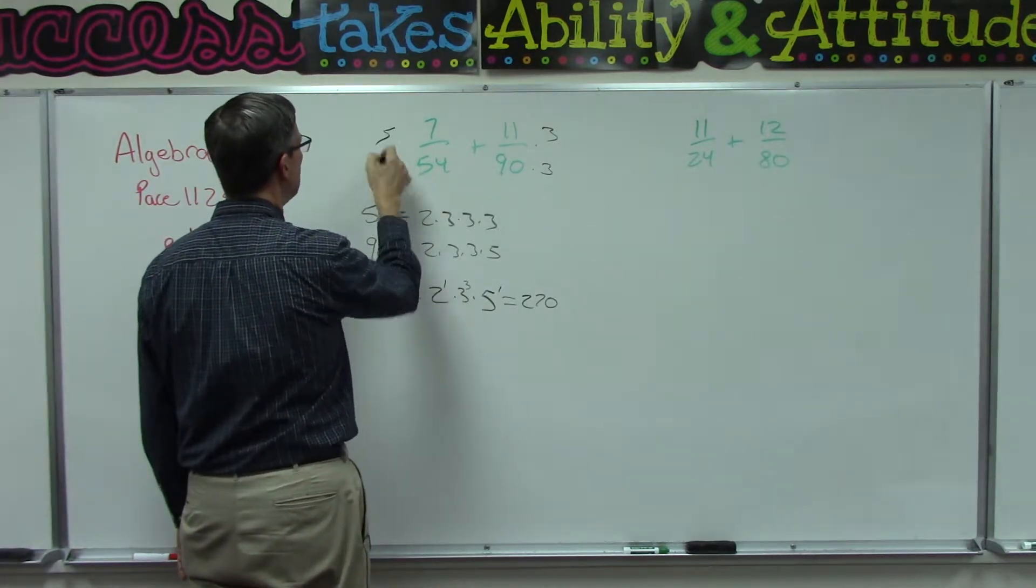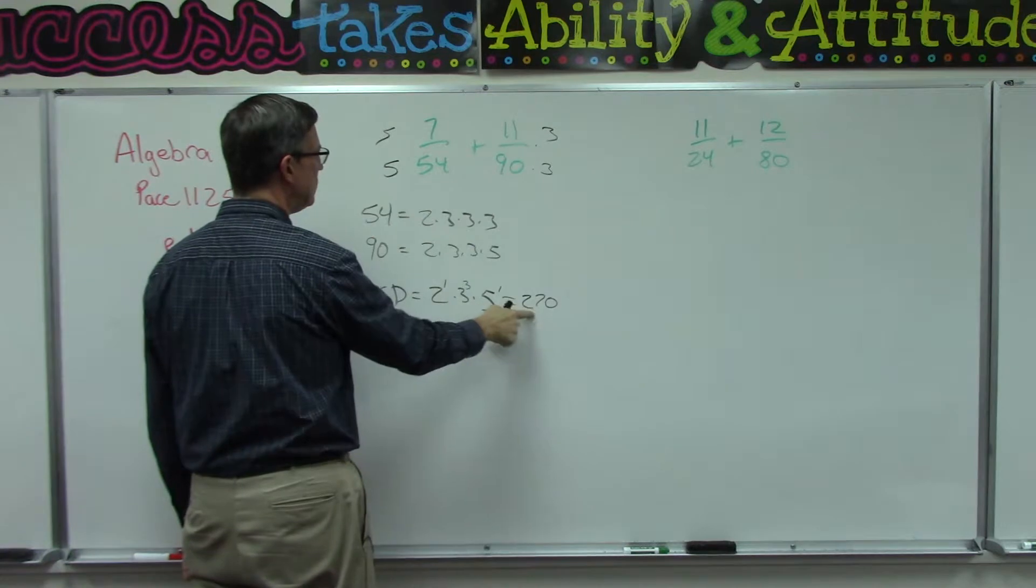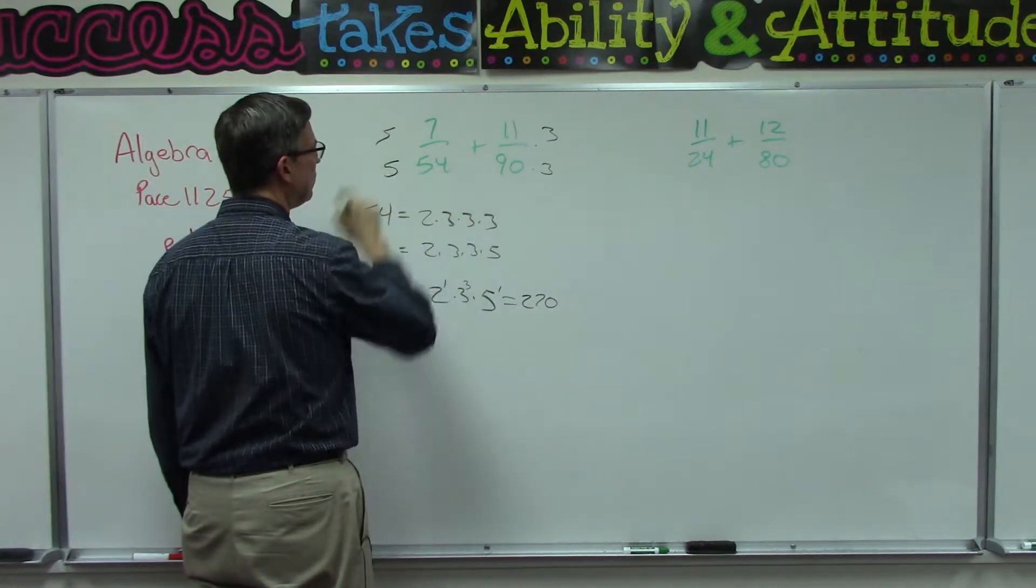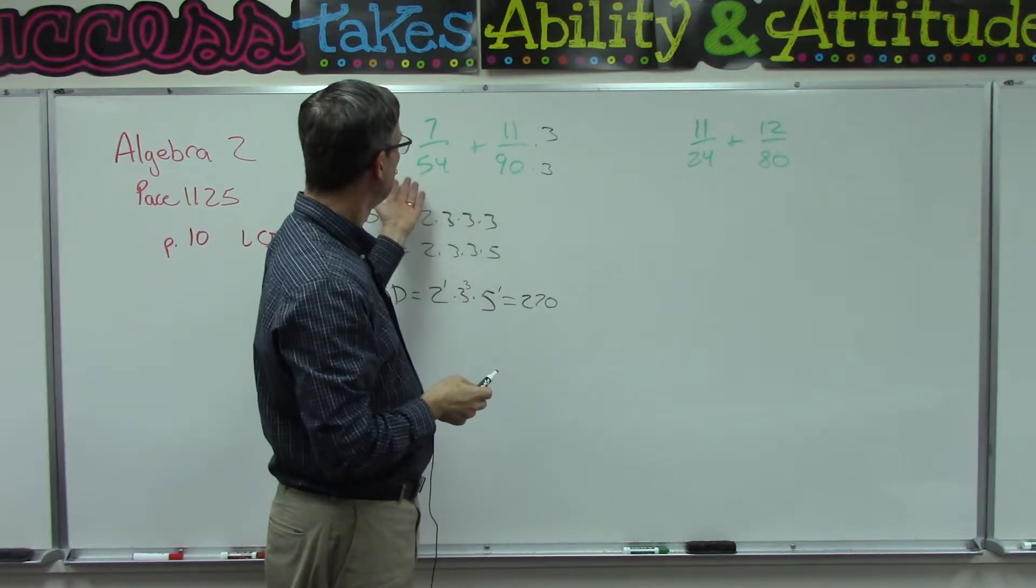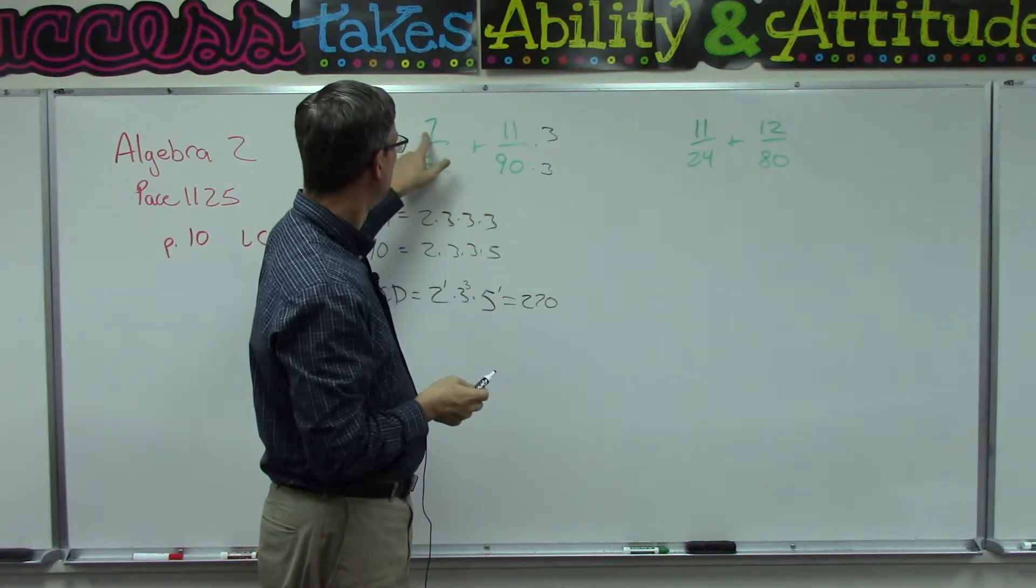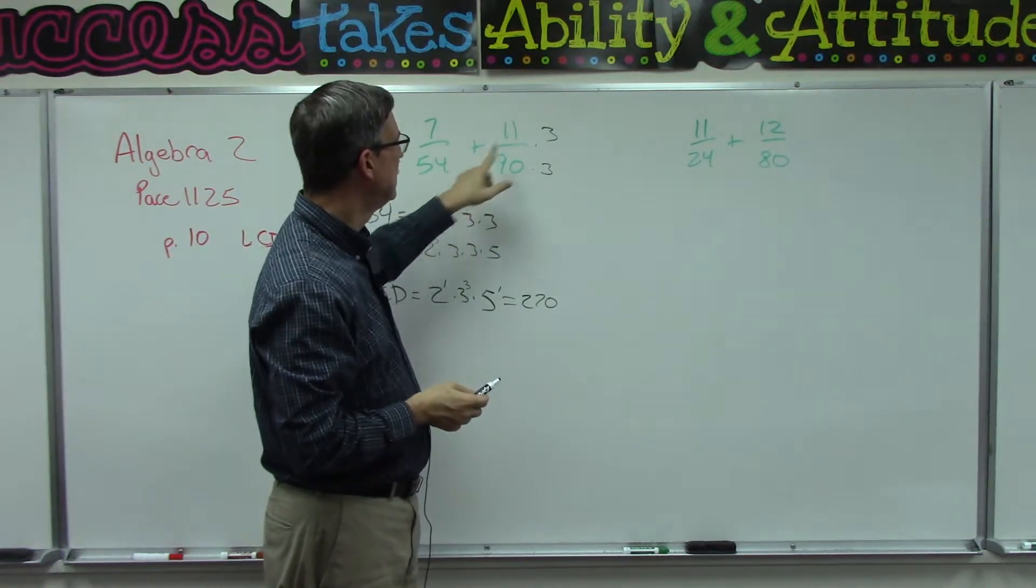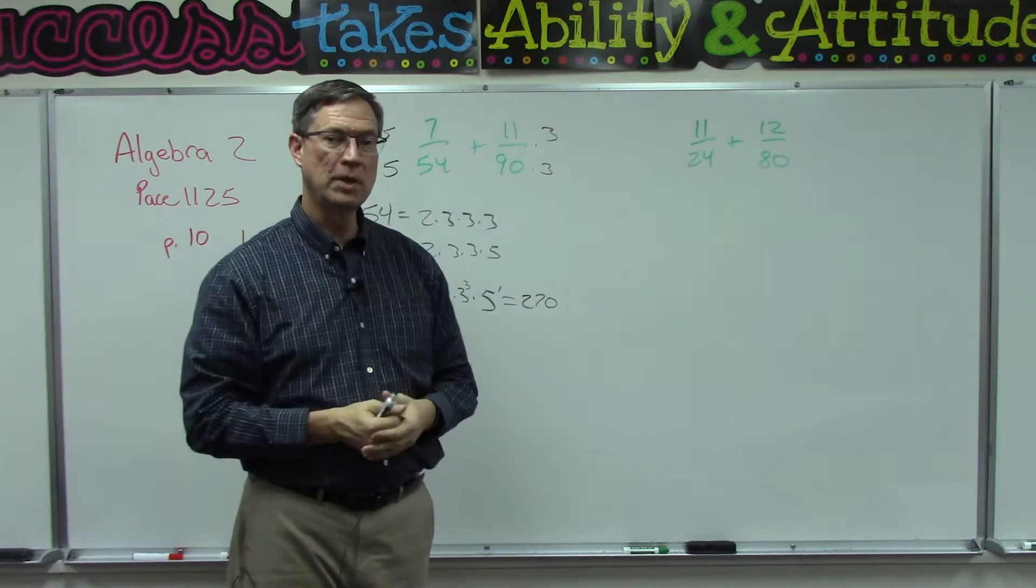Yep, looks like that's all that's missing is if I multiplied this by 5, 54 times 5 would be 270, so I'm going to multiply the numerator also times 5. Now I have the common denominator of looks like 35 over 270 and 33 over 270. Now we can combine them.